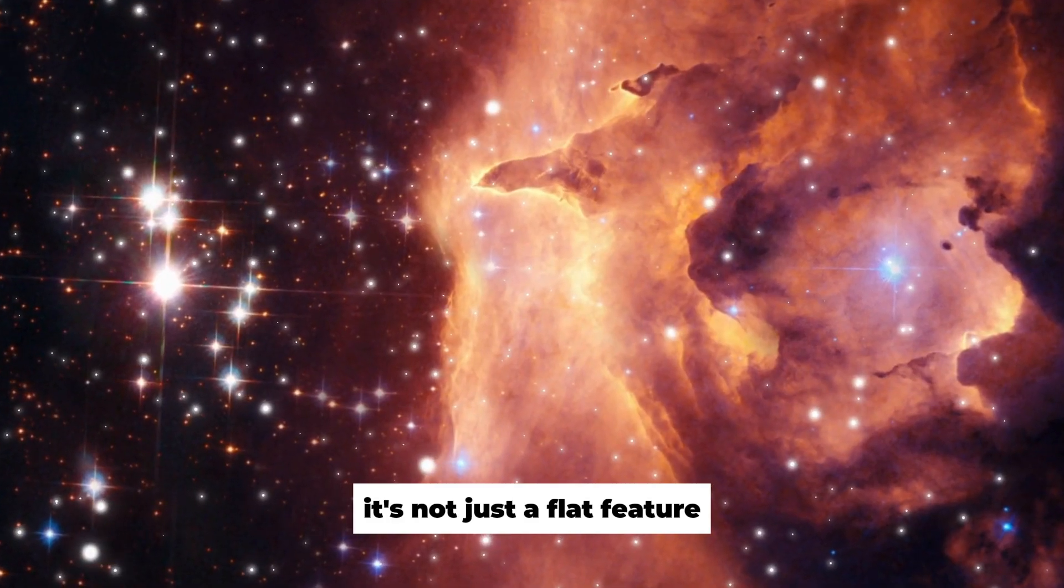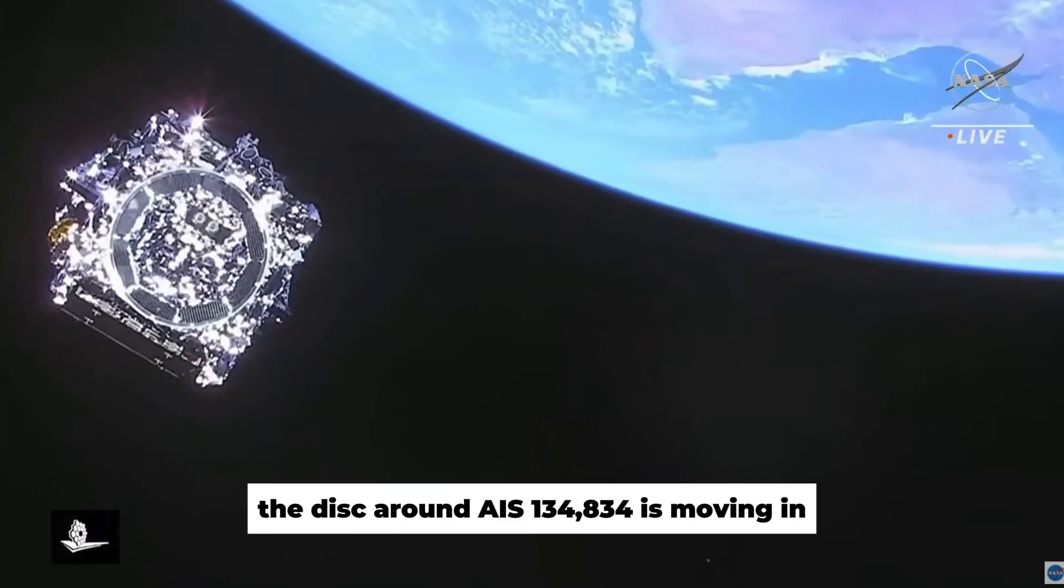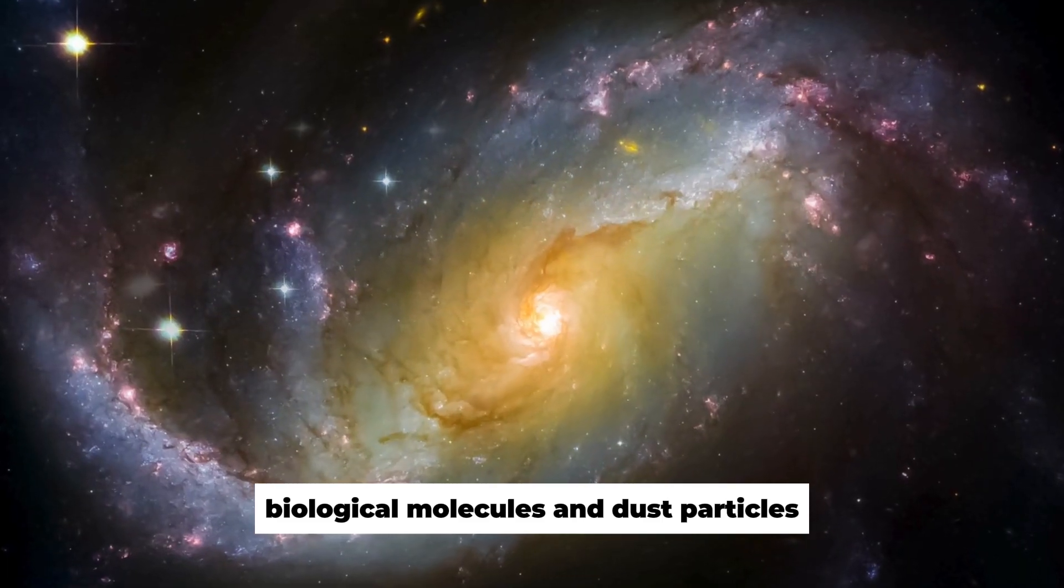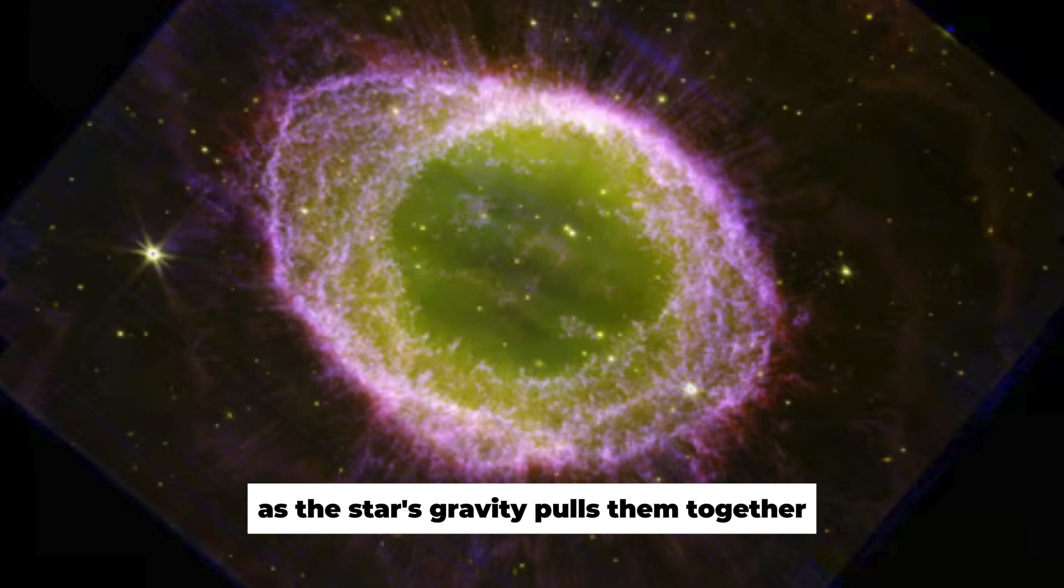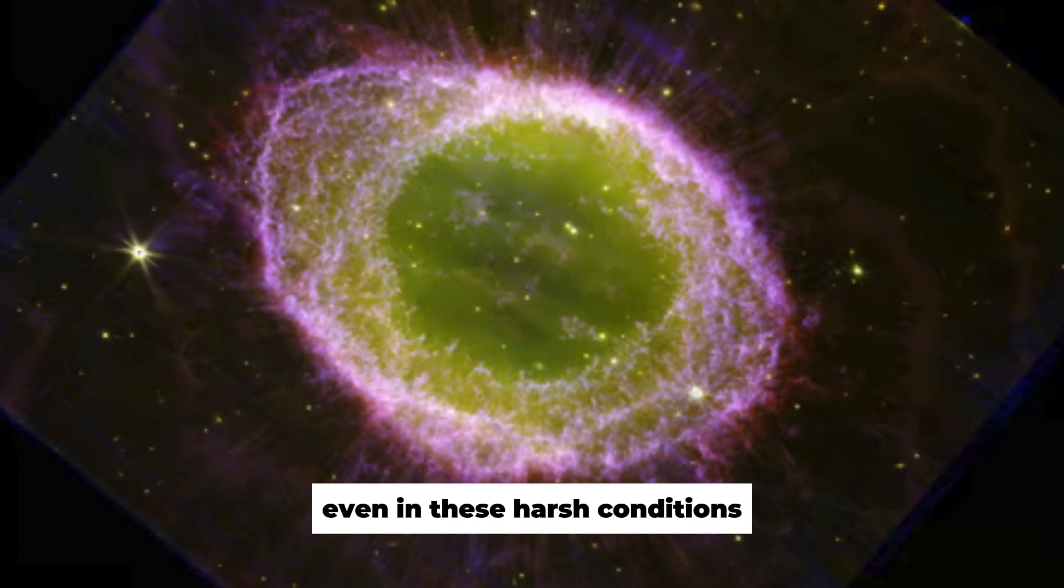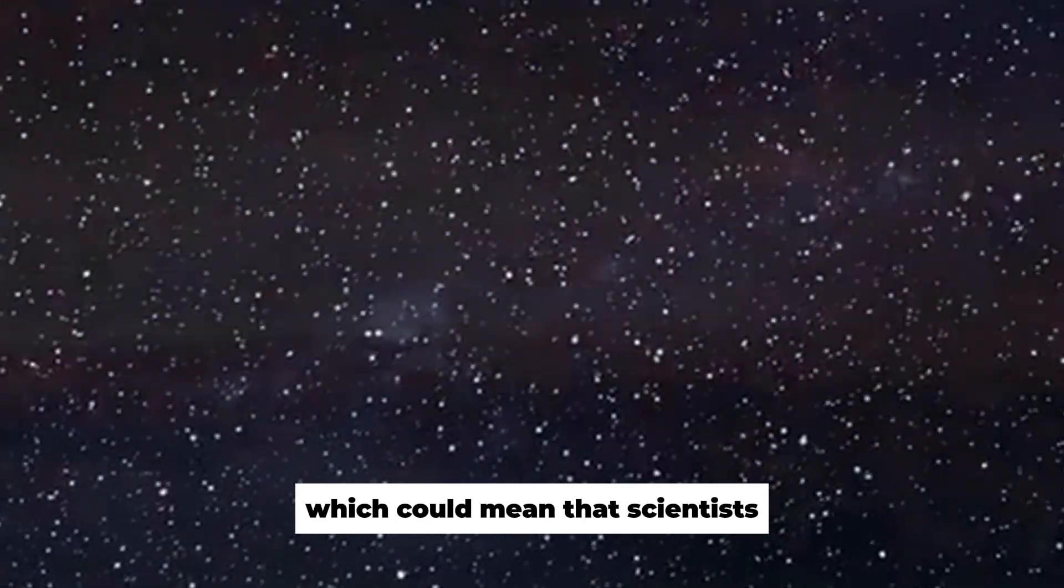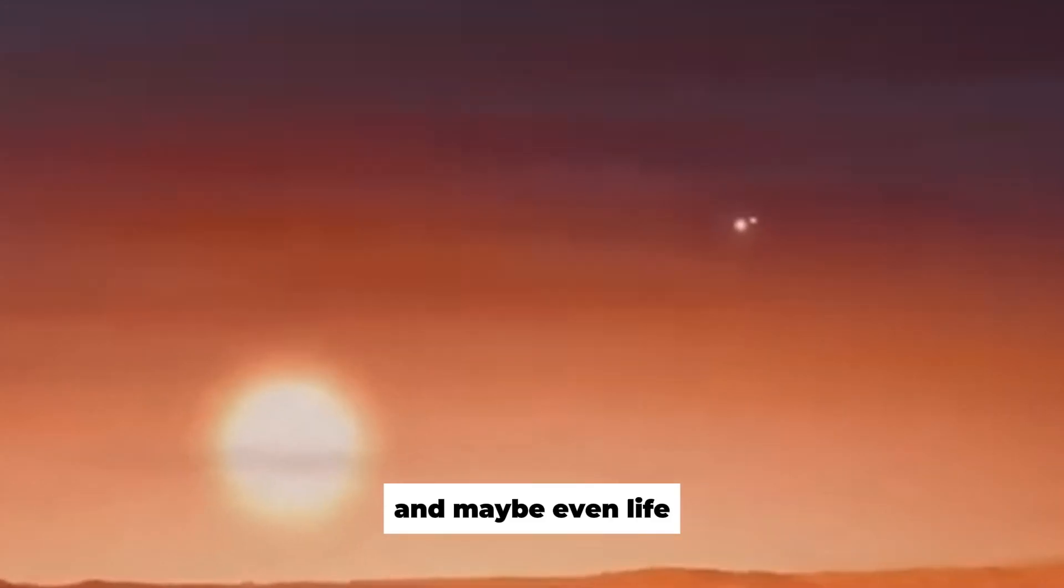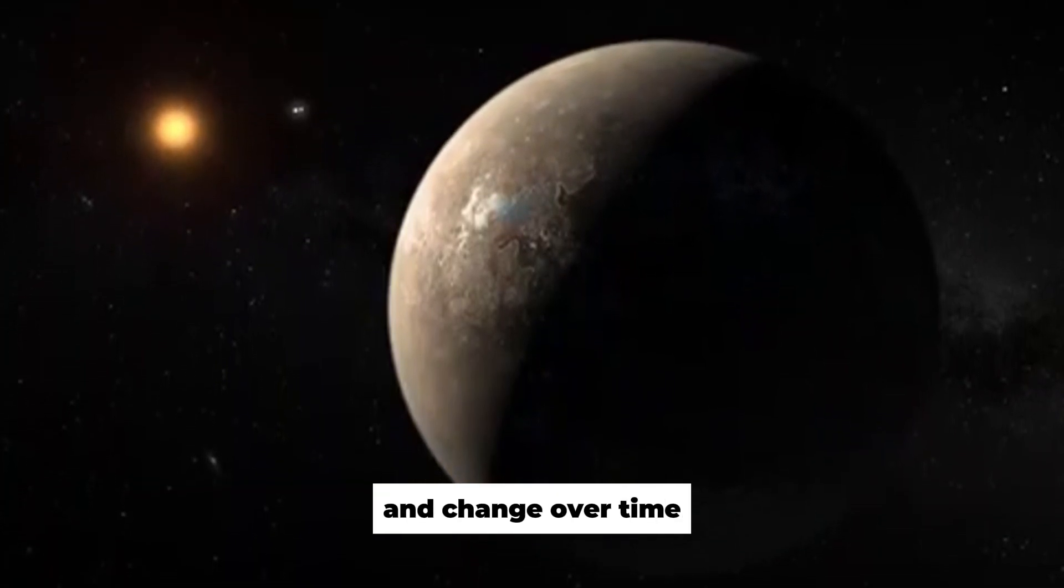It's not just a flat feature. The disk around IRAS 13481-6124 is moving and full of complex biological molecules and dust particles that interact with each other as the star's gravity pulls them together. Even in these harsh conditions, this interaction could cause planets to form, which could mean that scientists can look in more places for new worlds and maybe even life. Astronomers can improve their models of how stars grow and change over time by learning more about the disk's properties.